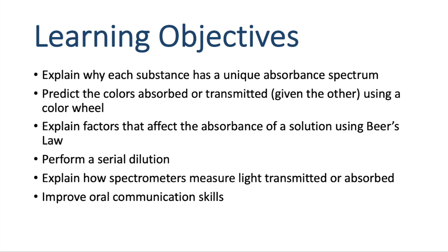So today we're going to be talking about spectroscopy. The first thing is explaining why each substance has a unique absorbance spectrum, predicting the colors that are absorbed or transmitted if you're given the other using a color wheel, explaining factors that affect absorbance based on Beer's Law, performing serial dilutions, explaining how spectrometers measure light transmitted or absorbed, and then our process skill that we're going to work on today is oral communication.